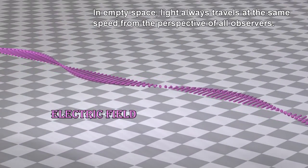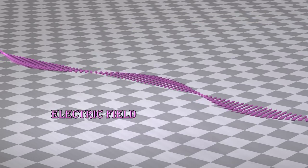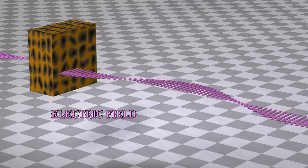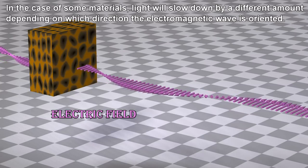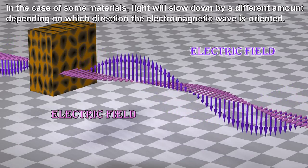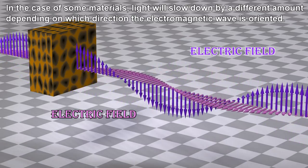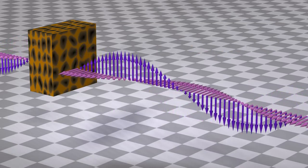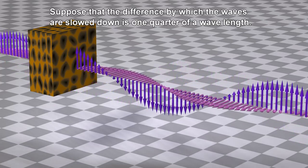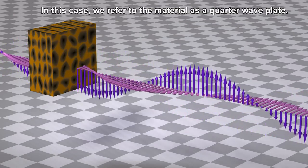In empty space, light always travels at the same speed from the perspective of all observers. But light can slow down when it passes through a material. In the case of some materials, light will slow down by a different amount depending on which direction the electromagnetic wave is oriented. Suppose that the difference by which the waves are slowed down is one-quarter of a wavelength; in this case, we refer to the material as a quarter wave plate.